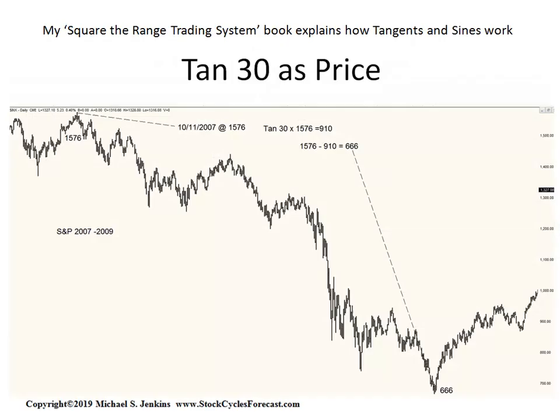My previous books showed how you would have gotten the final low regardless, once going down, using the tangent of 30. The tangents are explained in my Square of the Range Trading System books — how you can use sines, tangents, and cosines with prices. The top at 15.76: you take the tangent of 30 and subtract that from the high, and you get the low. One of our principles has always been that the time and price of future bull and bear markets' beginnings and endings will somehow be incorporated into the final price of the high or low.